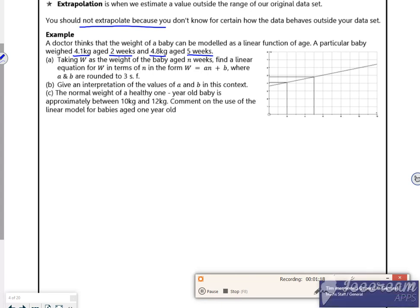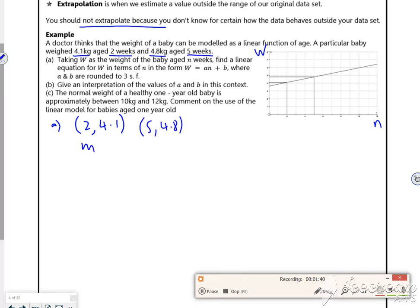Right so what do we know then? So for part A if I take I have the weight going up and the number of weeks going across. So I've got two coordinates there so they're actually backwards aren't they? Five and 4.8. So my gradient will be 4.8 take 4.1 for changing the weight minus the change in the number of weeks. So that's going to be 7 over 30.